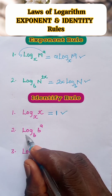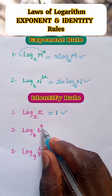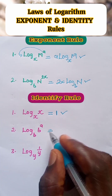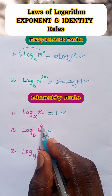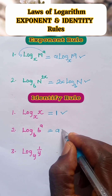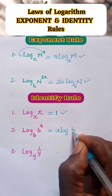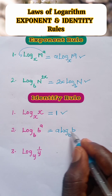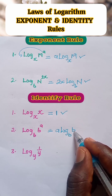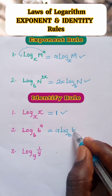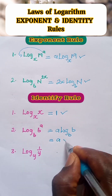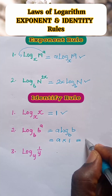Let's look at number 2: log of b to the power of a, to base b. We first apply the exponent rule — since a is an exponent of b, a comes in front to multiply, giving us a times log of b to base b. Next, we have the logarithm of a number equal to its own base, which by the identity rule equals 1. So log of b to base b equals 1, and we have a times 1, which gives the answer: a.